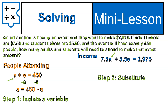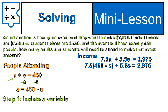Substituting changes the equation slightly — the only thing we changed is that 7.5 times A becomes 7.5 times (450 minus s). Everything else stays the same. But this gives us an equation with just one variable, s, which means we can solve for it. We use the distributive property: multiply 7.5 times both terms inside the parentheses. 7.5 times 450 gives us 3,375, and 7.5 times negative s gives us negative 7.5s. Everything else stays exactly the same.